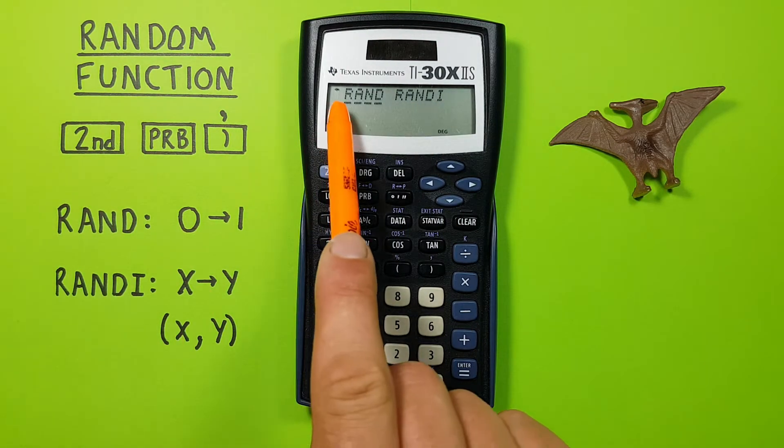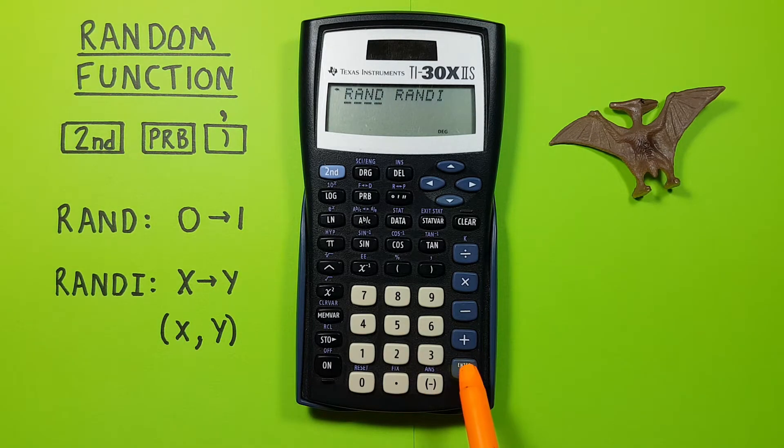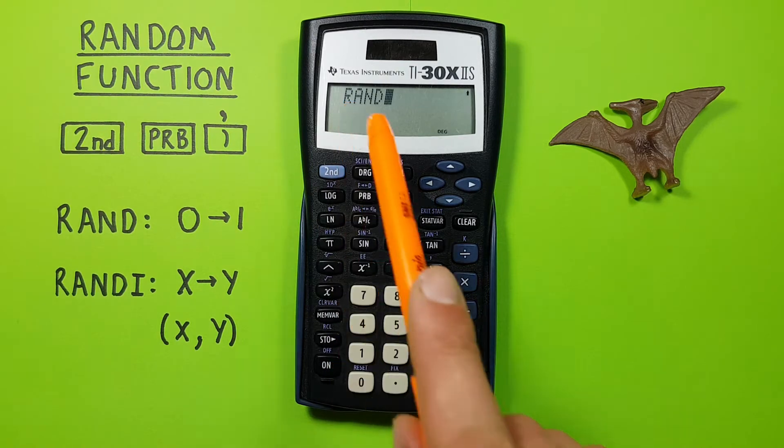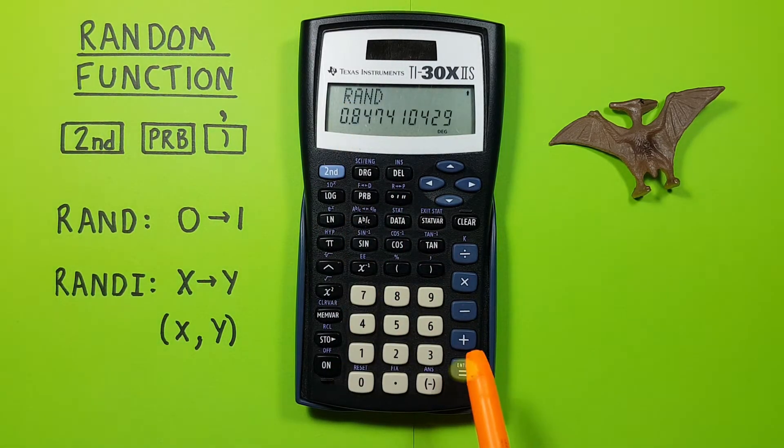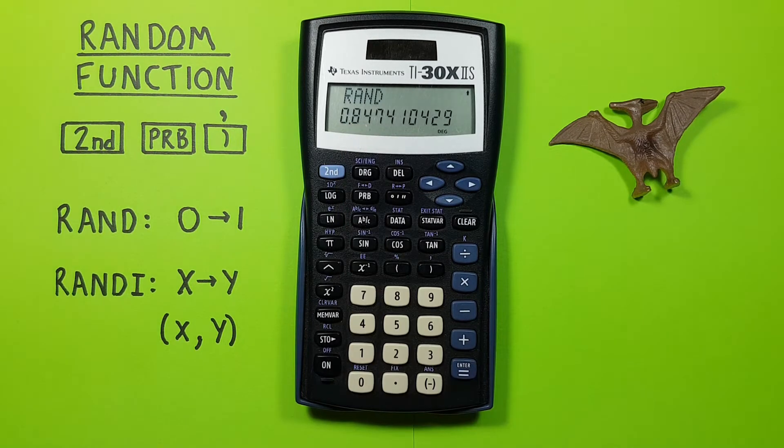If we select RAND our calculator will give us a value between 0 and 1. So if we press enter on that, we see we get RAND on our screen. And if we press enter, we see we get a decimal between 0 and 1. If we keep pressing enter, it'll keep giving us a new random decimal.